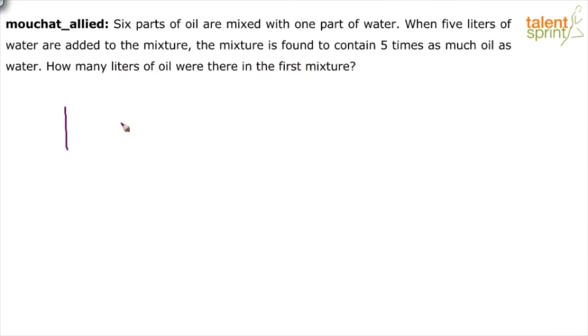So we have some mixture first of oil and water, where six parts of oil are mixed with one part of water. So oil is to water equals six is to one. This is the first mixture.